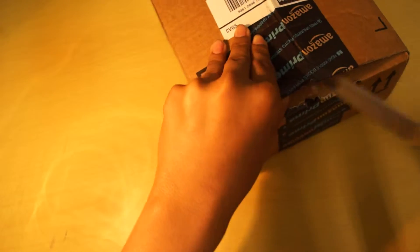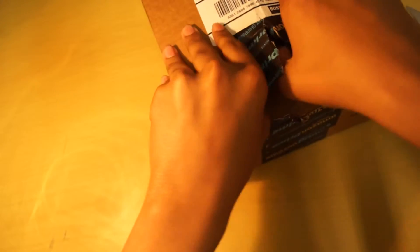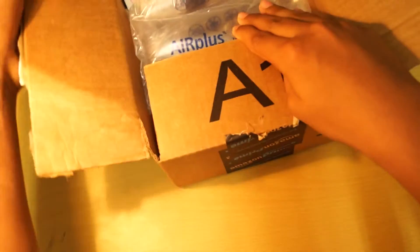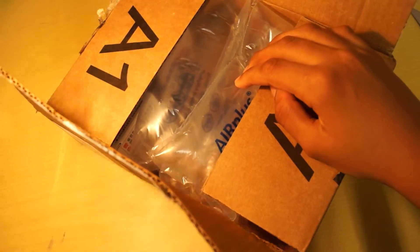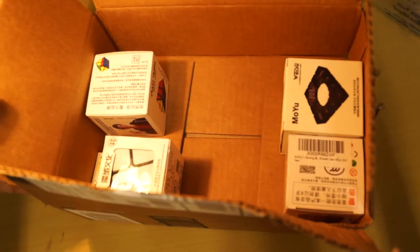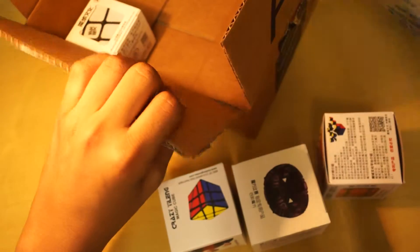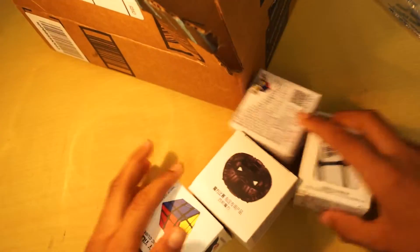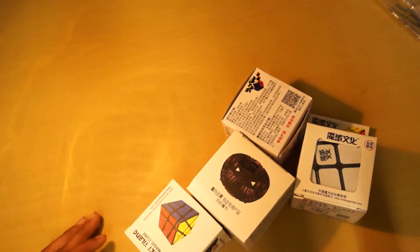In here should be a few Moyu cubes. Some of them will be shapeshifting cubes, others are n by n, so I think it's a 3x3, a crazy Yuling, a crazy windmill, and a 4x4. Yep, there's a lot of cubes in here. I'm very excited to get into each and every one of them.